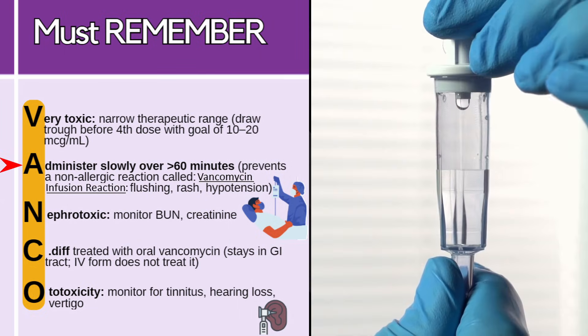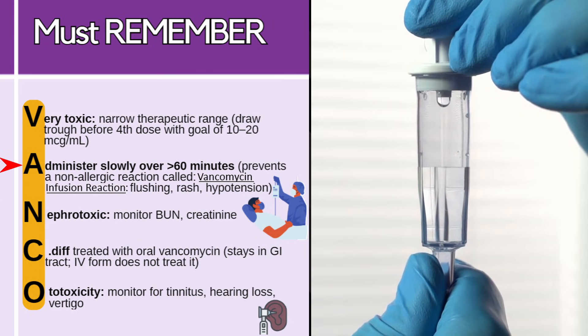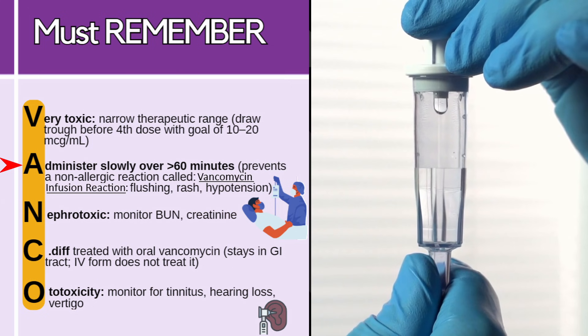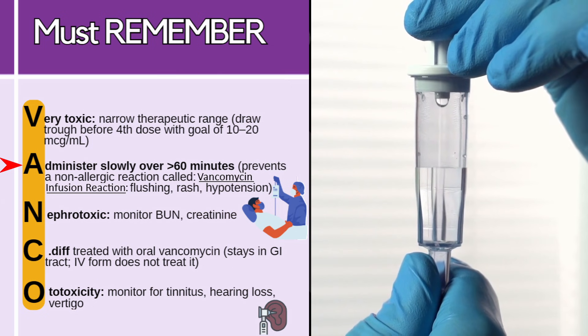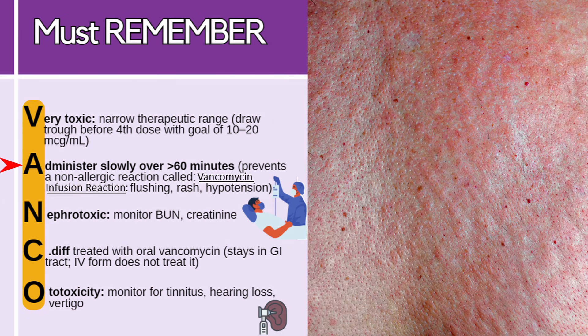Also, you want to administer this very slowly IV over more than 60 minutes, because we want to prevent a non-allergic reaction — this is where the patient will start to have flushing, rash, and hypotension.